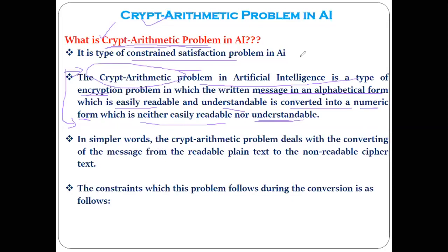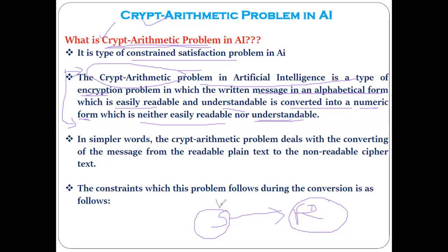Suppose there is a sender who wants to send a message to a friend as a receiver. The aim behind cryptography and encryption/decryption is this: there is a confidential message that the sender wants to send to the receiver. The sender will encrypt that message — encode it — in such a way that it can be read only by the receiver. It can be decrypted by the receiver only.